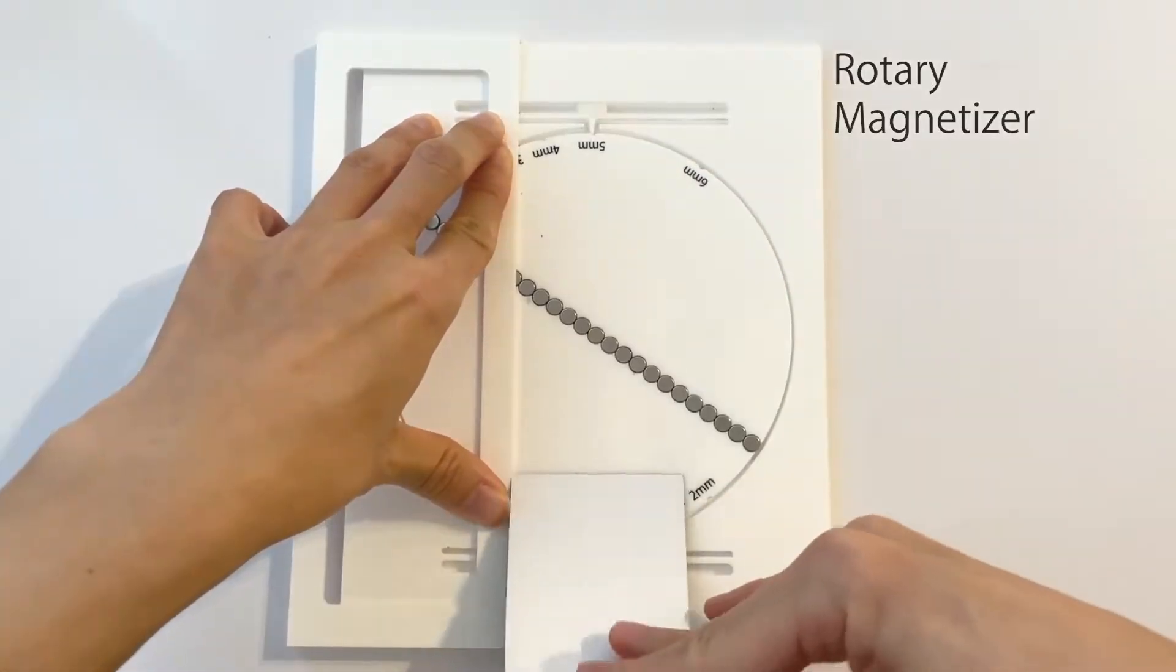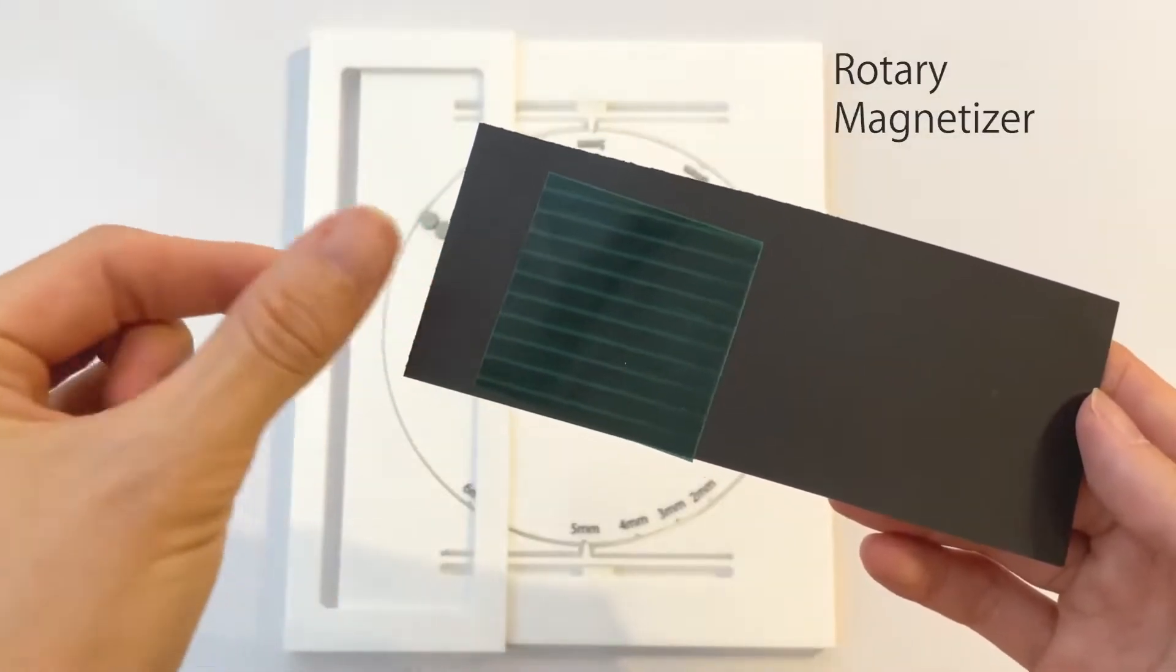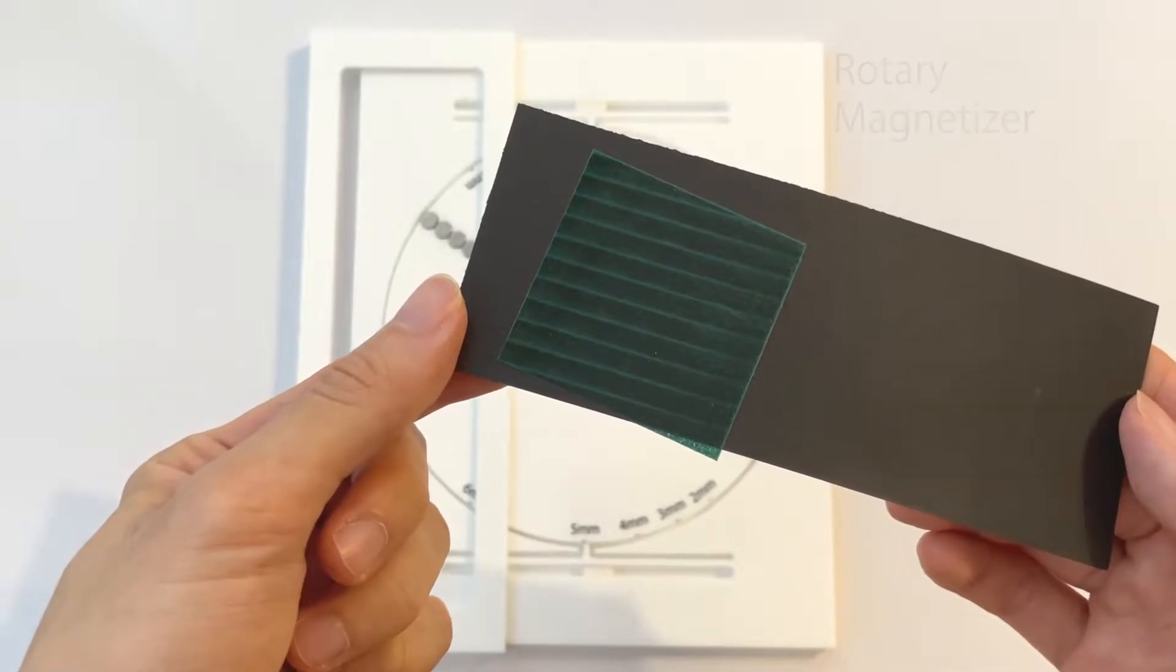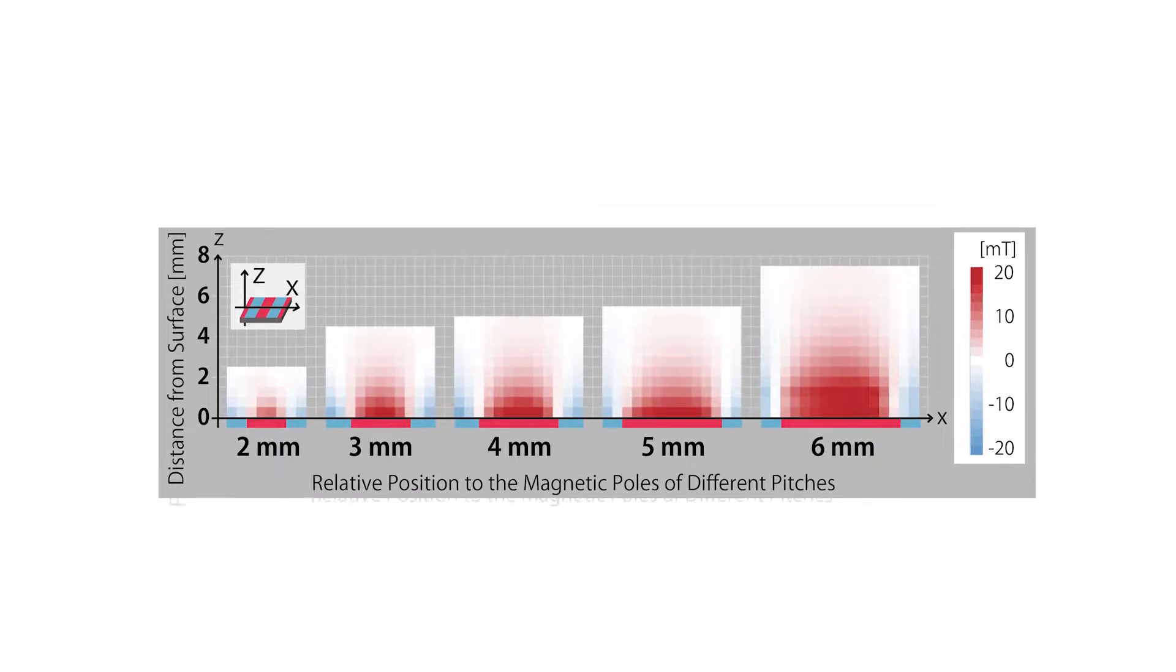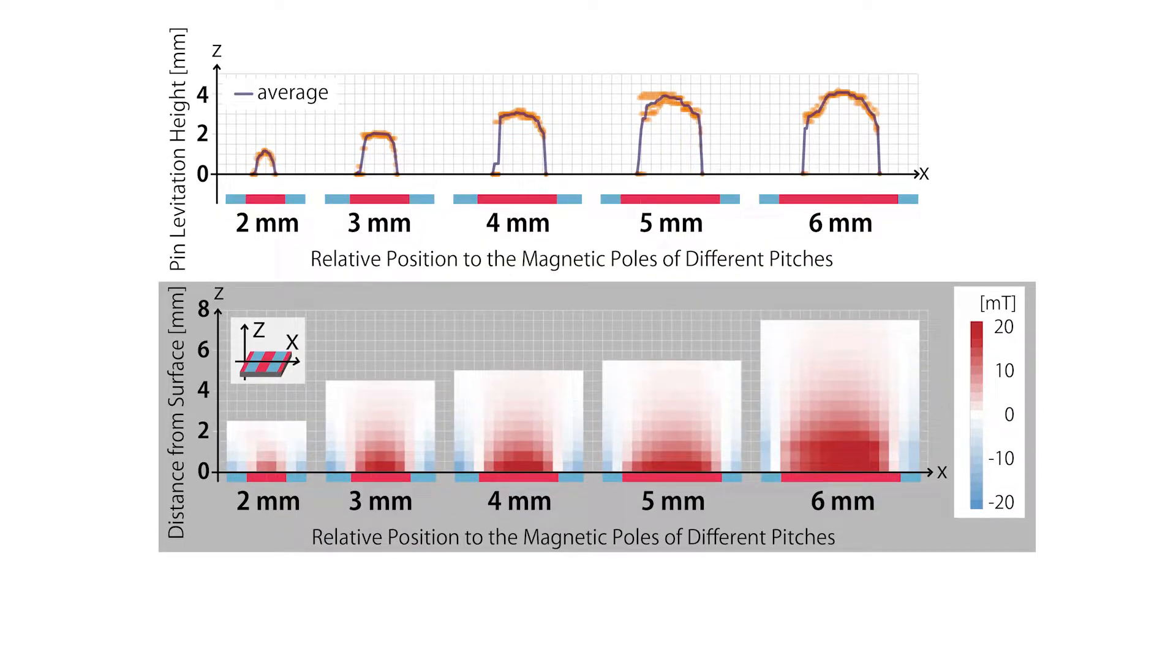Besides, the levitation height of the pins can be controlled by the magnetized pattern on the magnetic sheet. By changing the stripe width of the magnetic pattern from 2 to 6 mm, the magnetic field distribution above the sheet will vary, which in turn varies the pin levitation height.